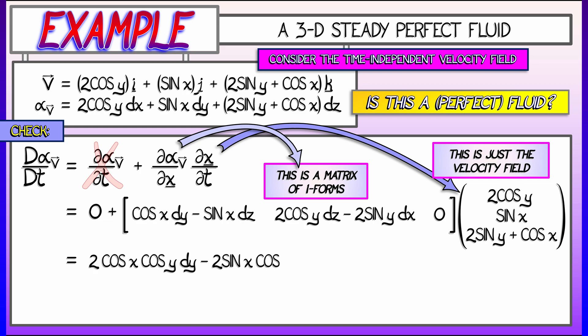Now I've got a matrix of things times a vector of things, and when I multiply these two together in the only way I know how, expand out all those terms, I get two cosine x cosine y dy minus two sine x cosine y dz plus two sine x cosine y dz minus two sine x sine y dx. Wow, that's kind of a mouthful, but I see those two terms in the middle there that cancel each other out. That means I can simplify this a little bit and get minus two sine x sine y dx plus two cosine x cosine y dy.